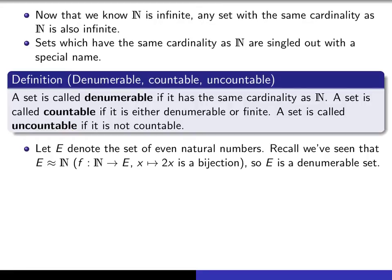Let's see if we can write down a few other examples of denumerable sets. I'm going to let E denote the set of even natural numbers. Recall that we've seen that E has the same cardinality as ℕ. Actually, the E that we looked at before was the set of all even integers, so this time I'm just letting E denote the set of even natural numbers. It's an easy exercise to show that the function that maps ℕ into E given by x maps to 2x is a bijection.